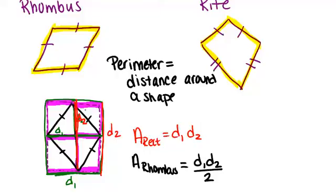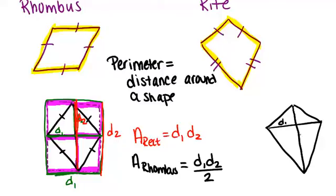Now, the formula for a kite is actually pretty much the same thing. We can also take a kite and draw in both diagonals, so diagonal one and diagonal two, and then think about drawing a rectangle around this kite.